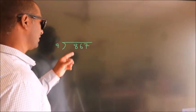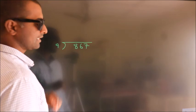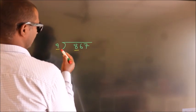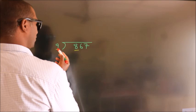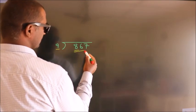How to divide 867 by 9. See, here we have 8, here 9. 8 is smaller than 9, so we should take two numbers, 86.